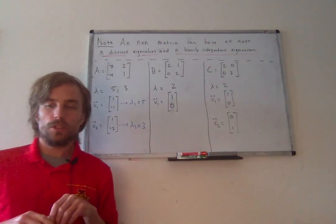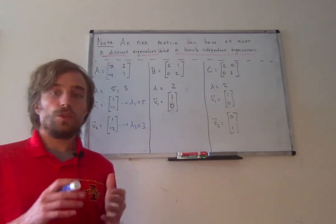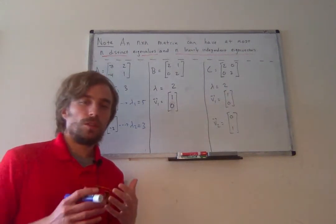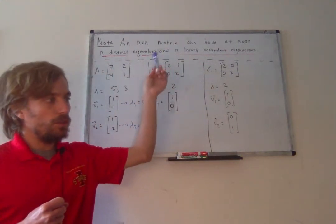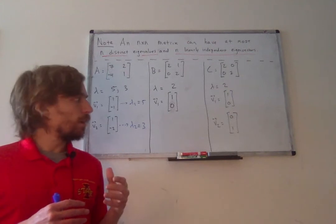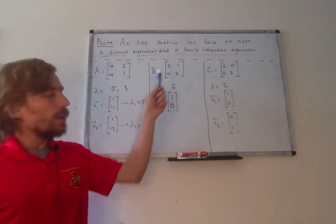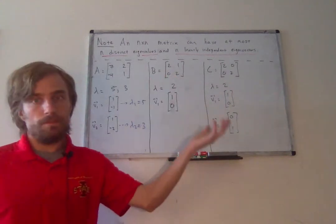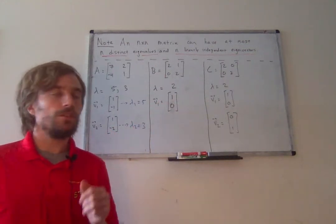B and C represent cases that are a little more interesting because each only has one distinct eigenvalue. With one distinct eigenvalue, especially with a 2×2 matrix, we have a few more possibilities for what can happen. For any value of n, if you have fewer than n distinct eigenvalues, there's more that can happen when looking at eigenvectors. Notice B is an upper triangular matrix with one distinct eigenvalue, 2, since 2 is the only value on its diagonal, and we've learned that an upper triangular matrix has all eigenvalues on its diagonal.